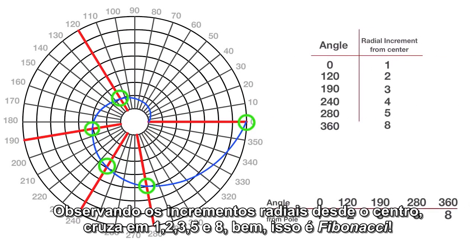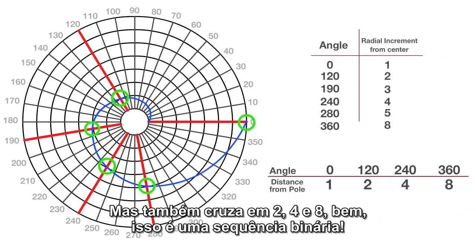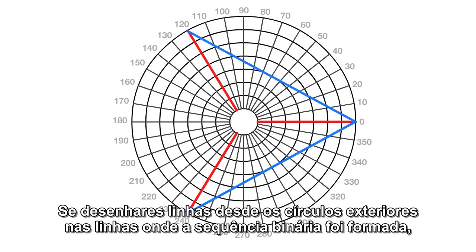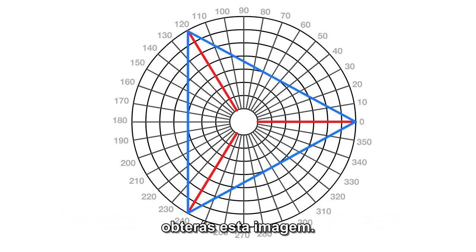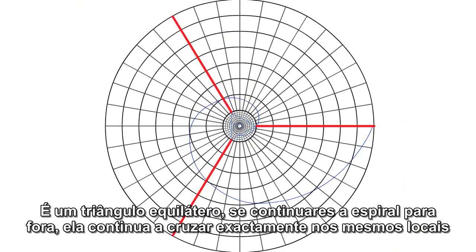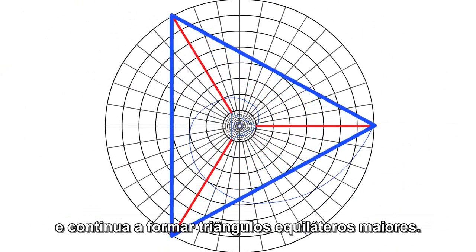Looking at the radial increments from the center, the spiral crosses at 1, 2, 3, 5, and 8 — that's Fibonacci. But it also crosses at 2, 4, and 8 — that's a binary sequence. If you draw lines from the outermost circles on the lines where the binary sequence was formed, you get an equilateral triangle. If you continue the spiral outward, it would continue to hit these exact same places and form larger equilateral triangles.